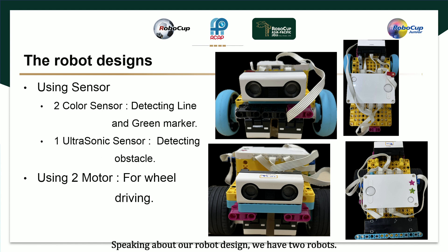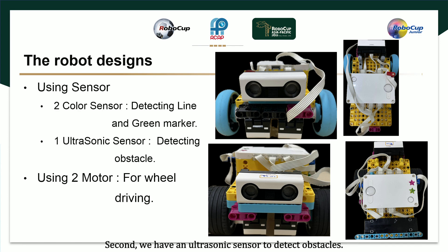Next, the robot design. Speaking about our robot design, we have two robots. First, for the sensors, we have two color sensors which can detect the light and the color green. Second, we have an ultrasonic sensor to detect obstacles.